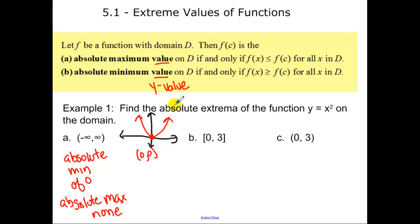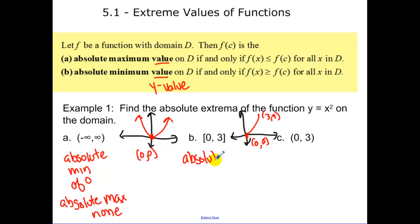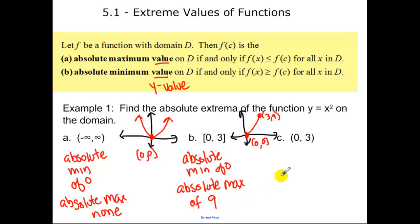Now find the absolute extrema on the function y equals x squared on the domain from zero to three. We'd start at (0, 0). When I plug in three, we'd be at the point (3, 9). So the absolute min — the smallest value we have — is zero. We have an absolute max, and our highest point is nine.